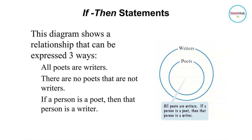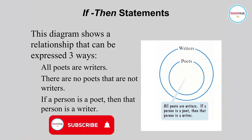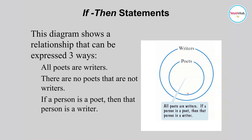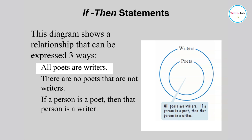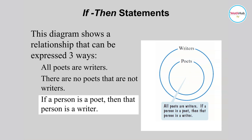Now let's consider the if-then statements. The diagram here shows a relationship that can be expressed in three ways. We have poets as a subset of writers, so we can say all poets are writers — because if you are inside this set, you are also inside the bigger set of writers. Equivalently, you could say there are no poets that are not writers, or: if a person is a poet, then that person is also a writer. That third statement is the if-then statement.